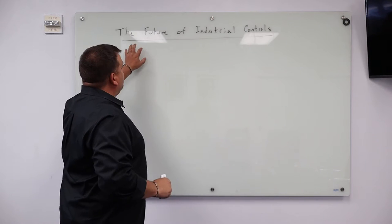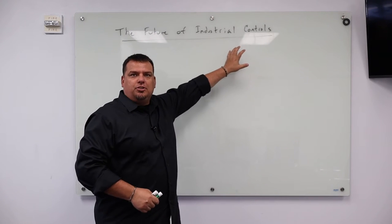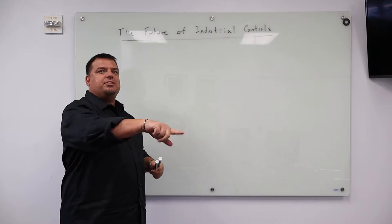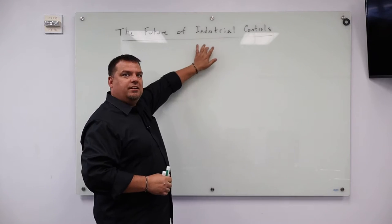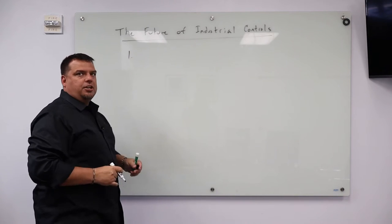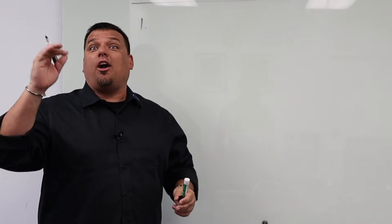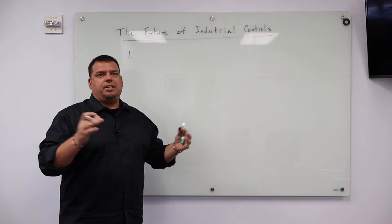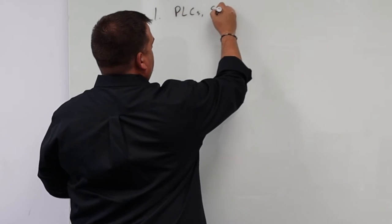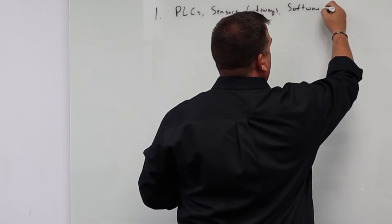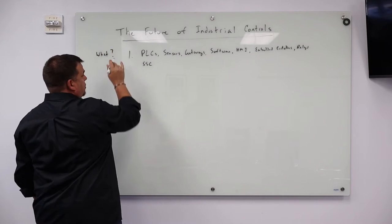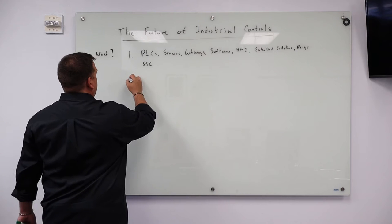So we have to ask ourselves, what is the future of industrial controls? So to answer that question, we have to answer the first question, which is what is the present of industrial controls? So what is it? Why do we have industrial controls? Tell me the reason that we have industrial controls. So let's start with what are some examples of items that live within the industrial controls ecosystem. So PLCs, sensors, gateways, software, HMIs. So that is the what. The what of industrial controls today are all these things. What's the why?